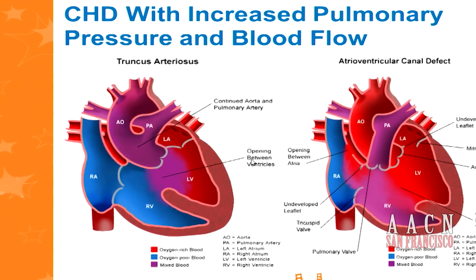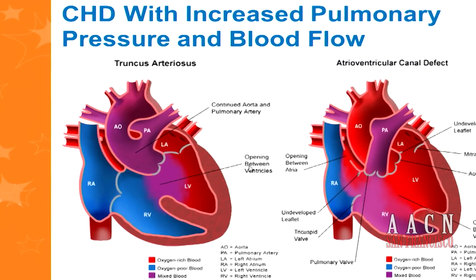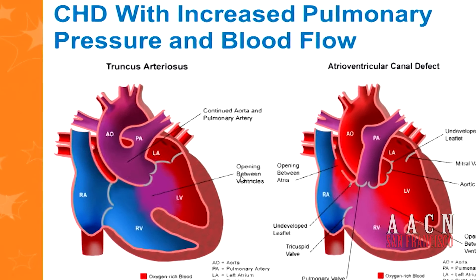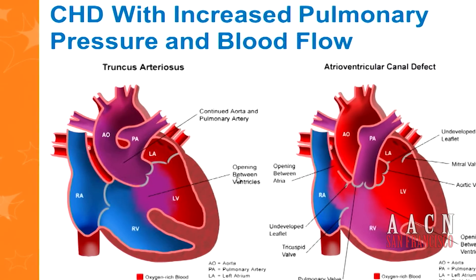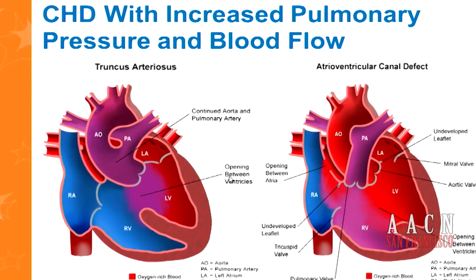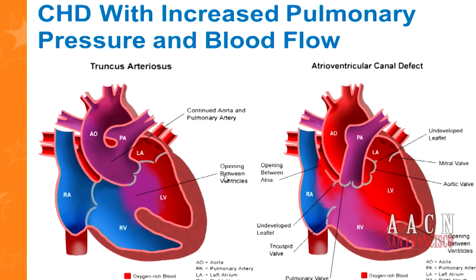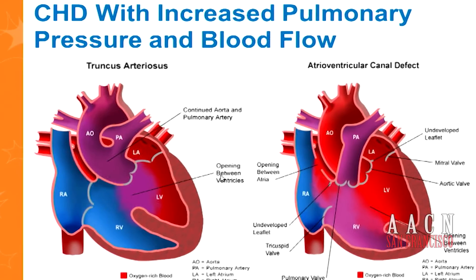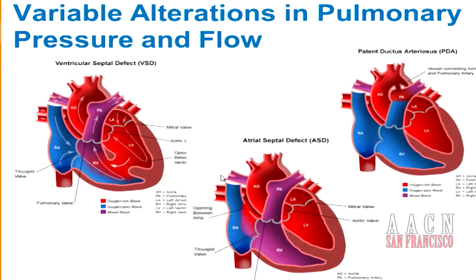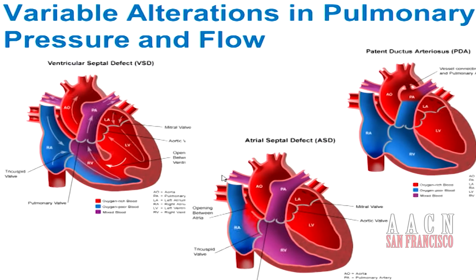Regarding congenital heart disease and pulmonary hypertension: truncus arteriosus and AV canal defect are examples where there's both increased pulmonary pressure and blood flow — the pulmonary arteries see as much pressure and flow as the aorta. With a VSD there's also increased pressure and flow. A PDA produces extra flow but much less than defects like truncus. The degree of increased pulmonary pressure and flow varies with different defects.